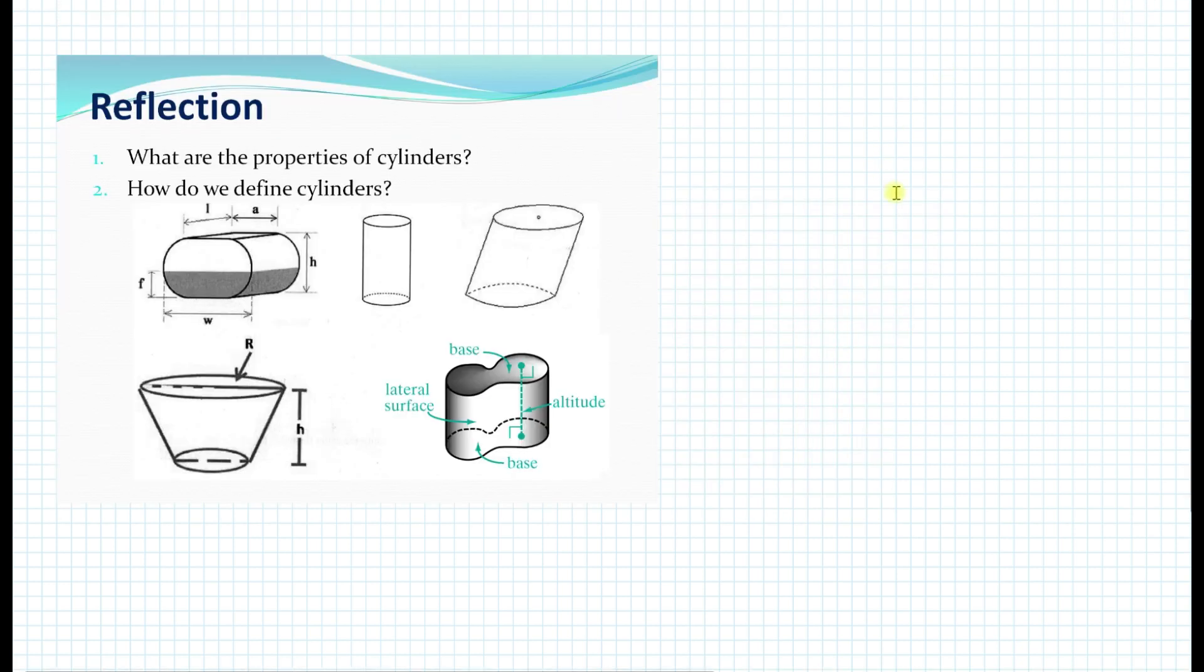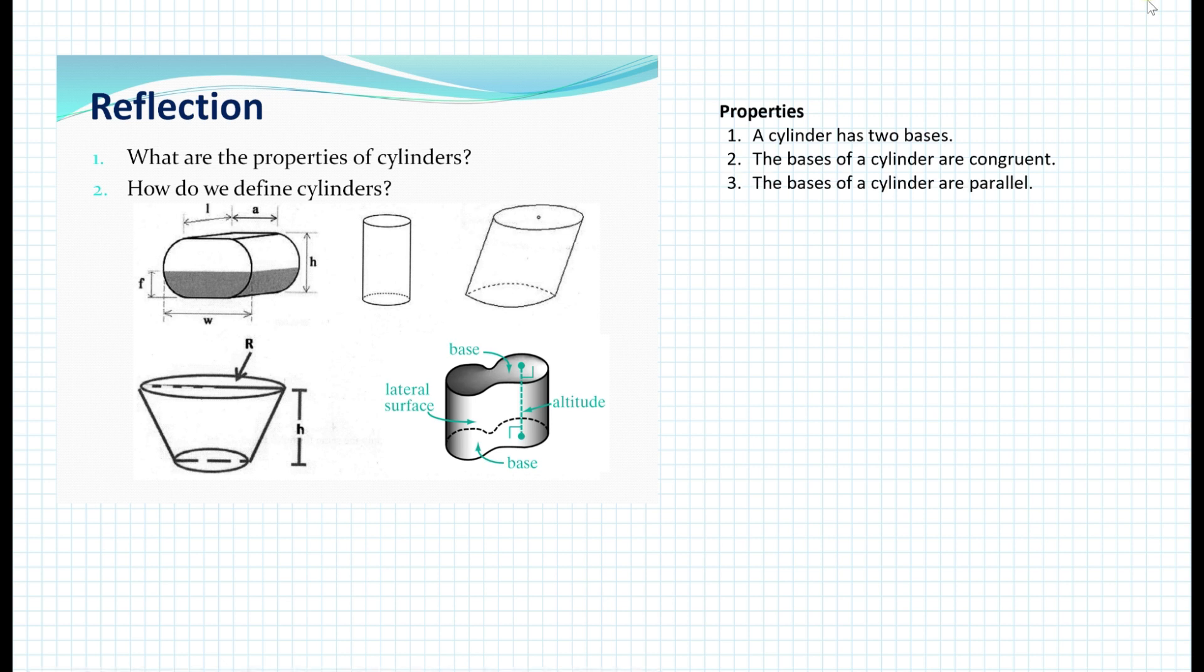As a manufacturer or engineer, you do need to know what the volume is and what the surface area is to, for example, minimize cost and maximize profit. So let's get into it. Let's first discuss the properties of cylinders, and then how do we define cylinders. The first property of the cylinder is that a cylinder has two bases. This is very important information in developing the formulas. A second property is that the bases of the cylinder are congruent. What else can we say about the bases? That the bases of the cylinder are parallel.